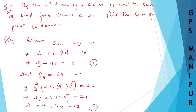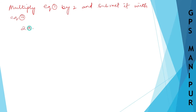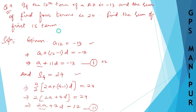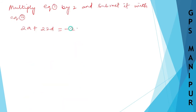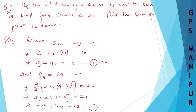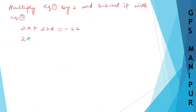Multiplying equation number 1 by 2: 2 into A is 2A, 11 into 2 is 22, so 2A plus 22D equals minus 13 into 2, which is minus 26. Equation number 2 remains as is: 2A plus 3D equals 12. Now we subtract.